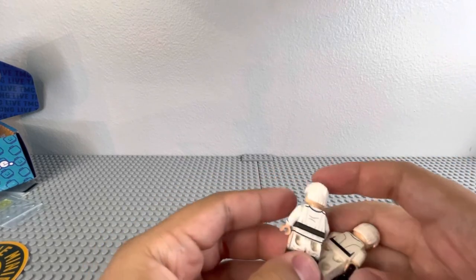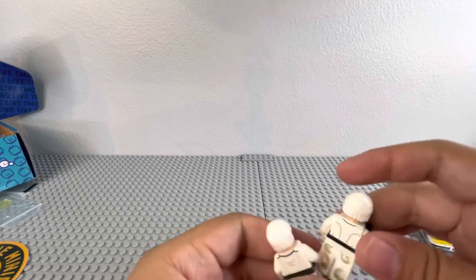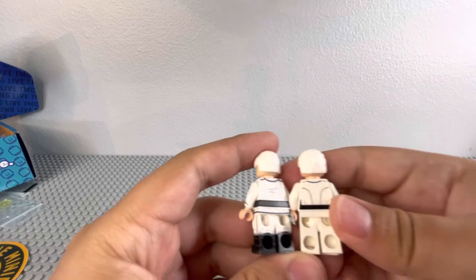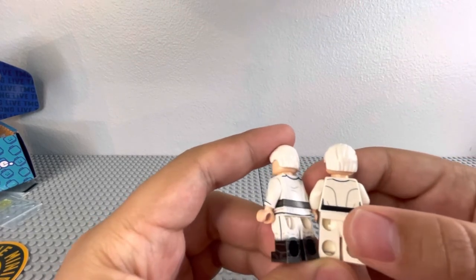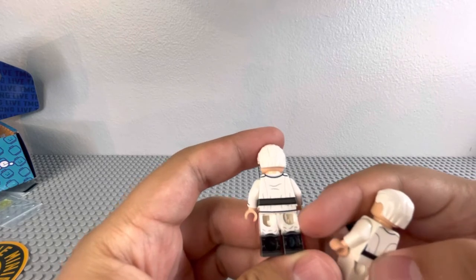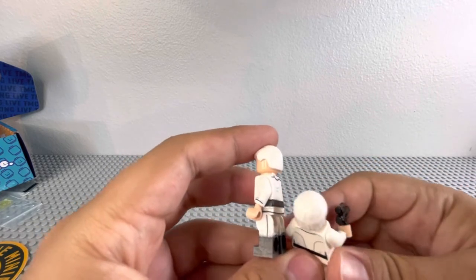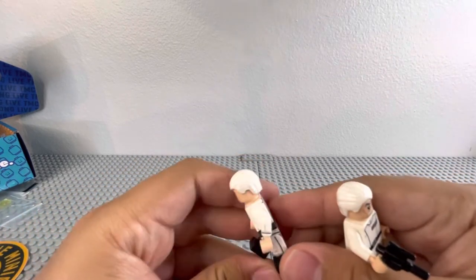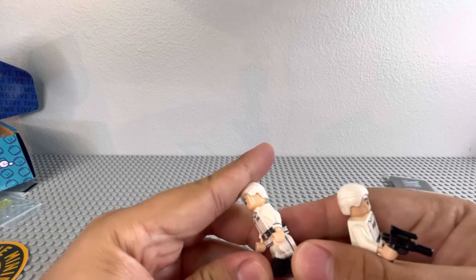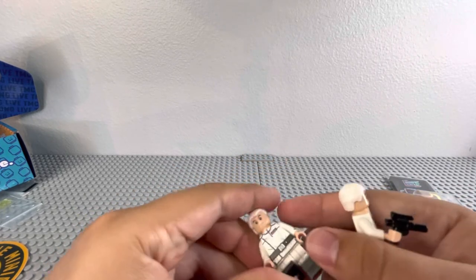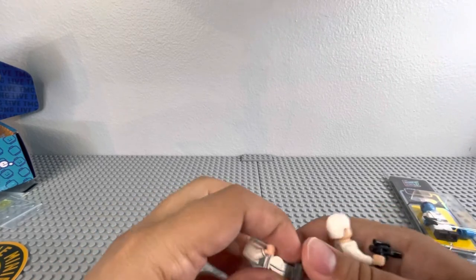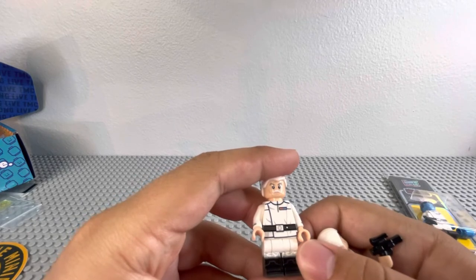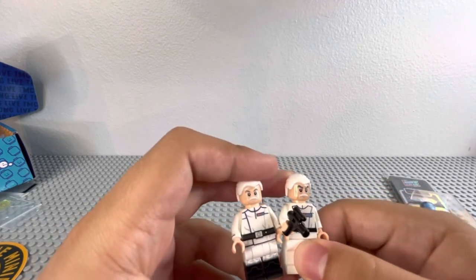So, speaking of the legs, these legs are not even a comparison, because Minifig Co.'s legs are a thousand times better. You can see, even on the back of the legs, they have dual-molded legs with printing on the back. There's also printing on the side. And I'm not sure if there's printing in between the legs. It doesn't look like it.